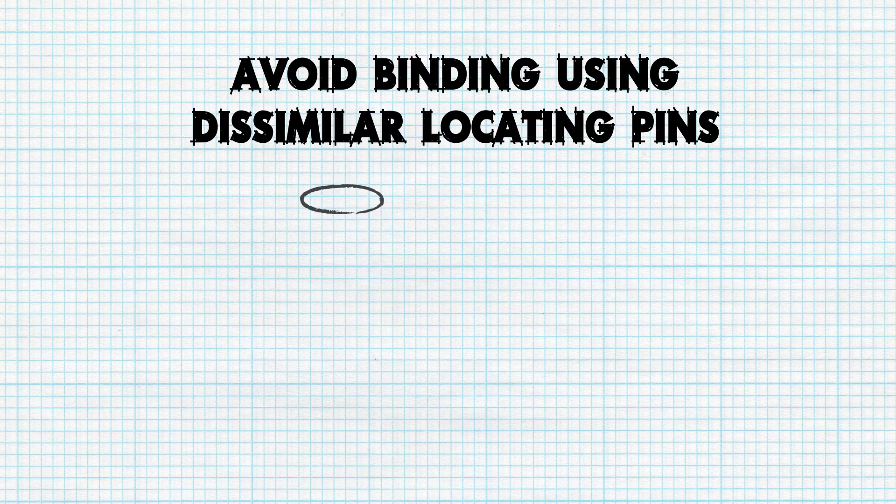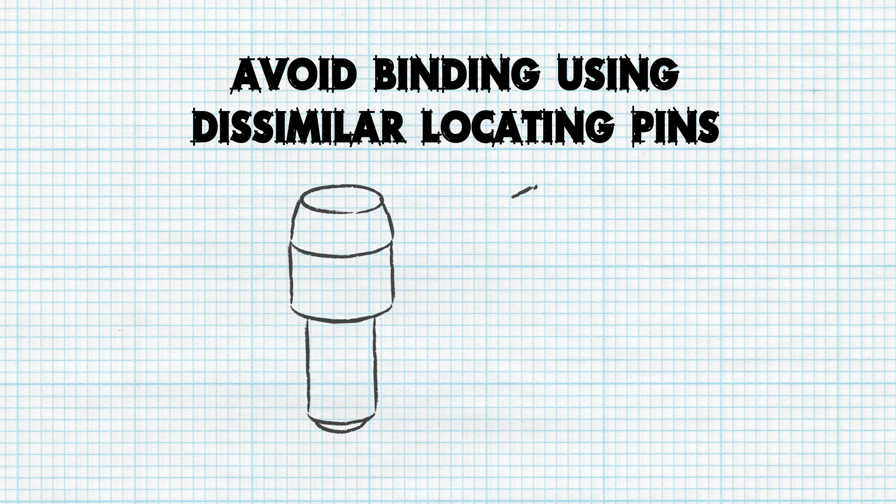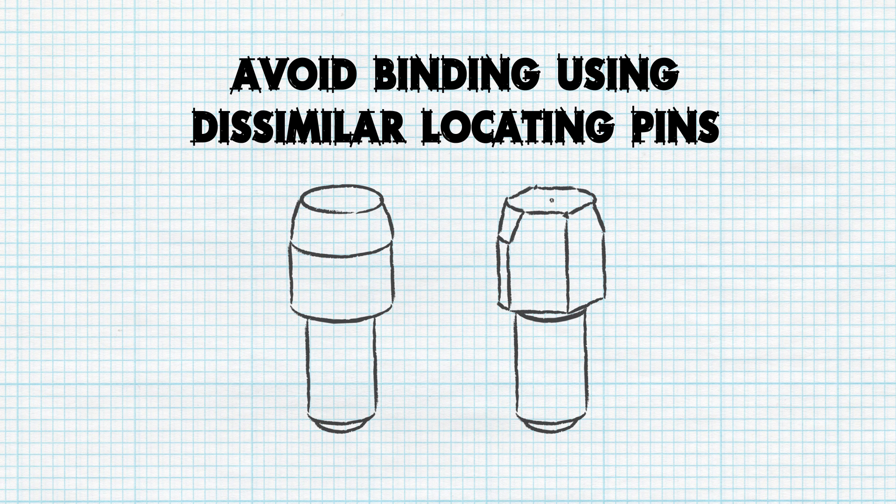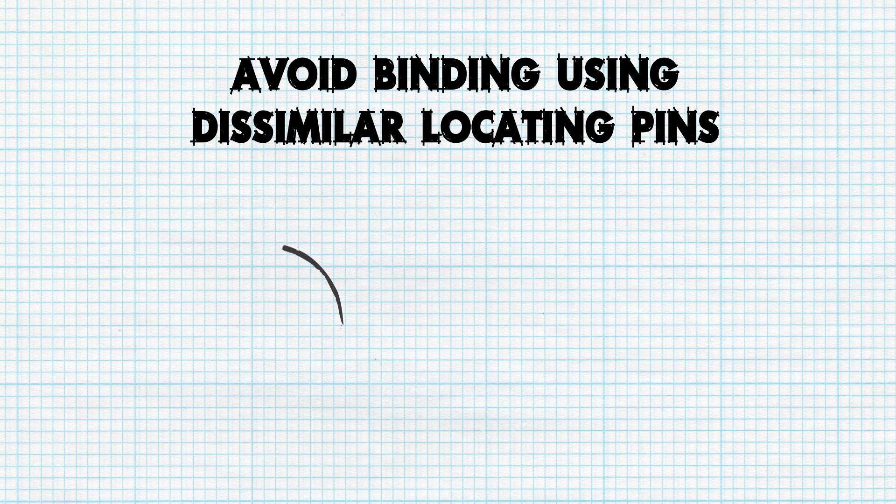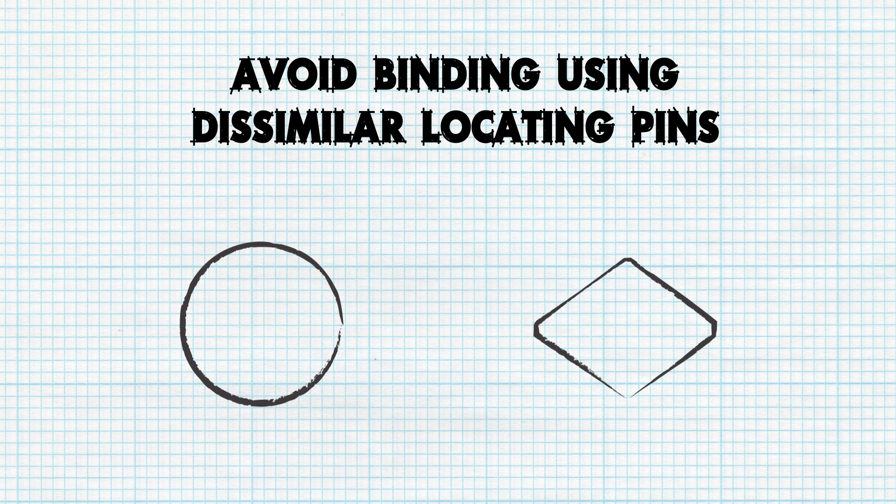The other main way to avoid binding of a workpiece with a pair of locating pins is to use a dissimilar pair of pins, specifically a two-way and a four-way pin together. This is most commonly achieved through the use of a round pin and a diamond pin, which allows some radial play as a degree of freedom, helping to alleviate any lateral binding of the two pins with the workpiece.